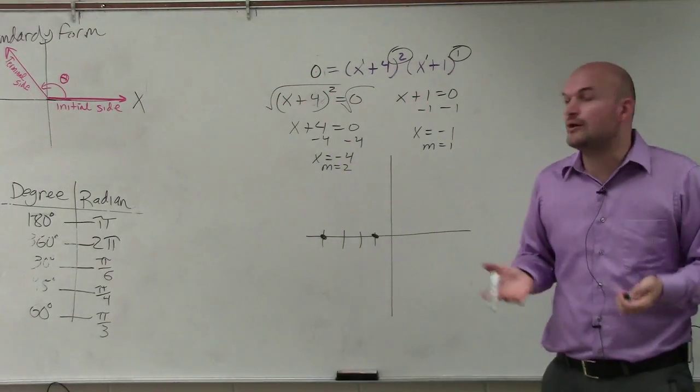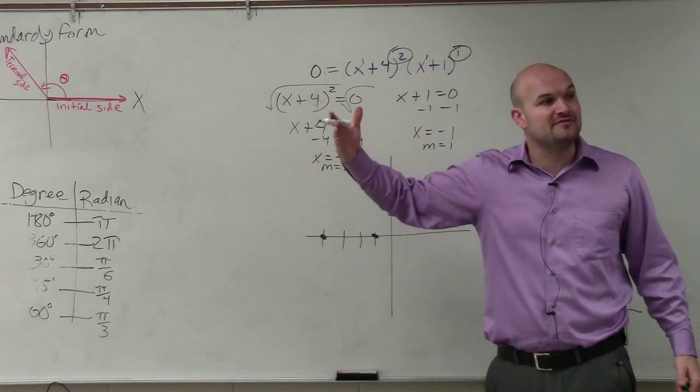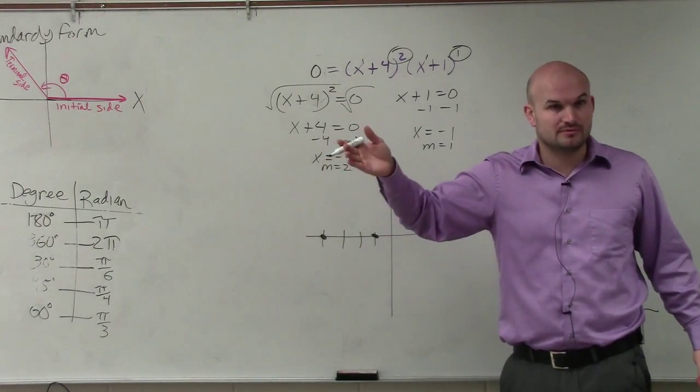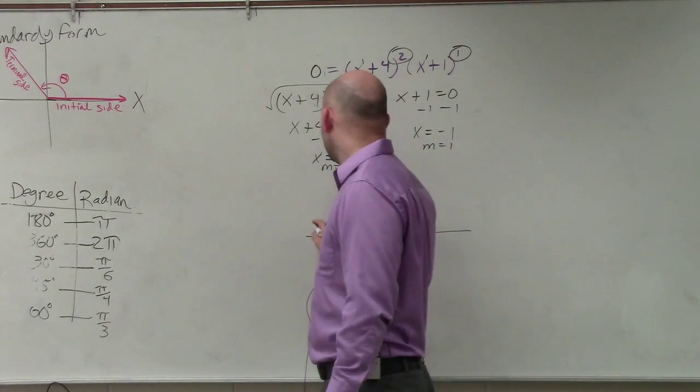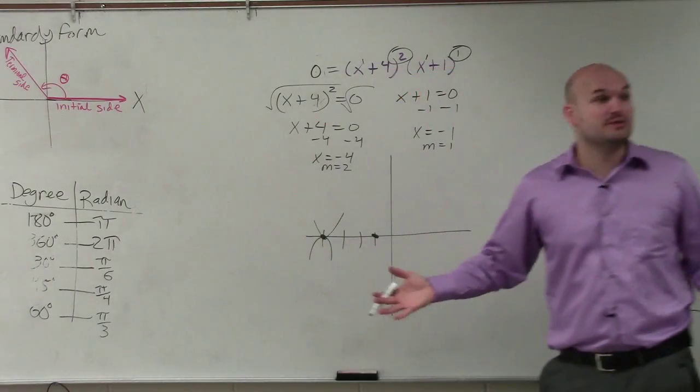Now, in your notes, what we talked about was that if the multiplicity is even, that means the graph bounces at the 0, right? Or bounces at the x-intercept. So at negative 4, the graph is going to bounce. We don't know if it's going to bounce up or bounce down, but we know it's going to bounce.